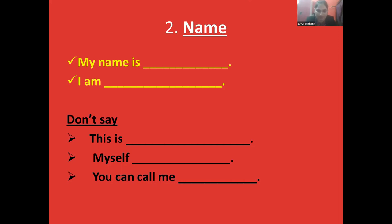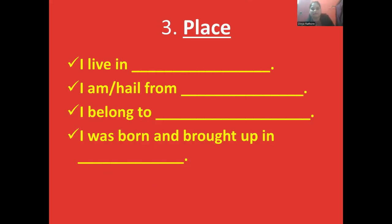The third step is to tell about your place — where you belong. You can say 'I live in Delhi,' 'I am from Delhi,' 'I hail from Delhi,' 'I belong to Delhi,' or 'I was born and brought up in Delhi.' These are different ways you can tell about your place.